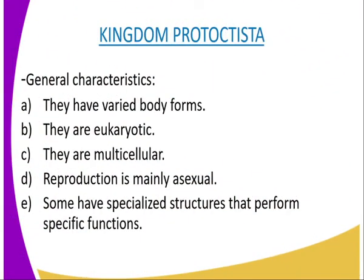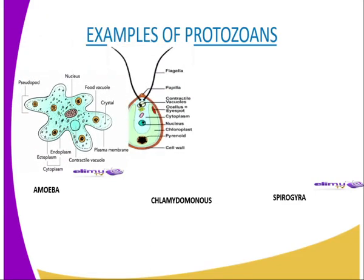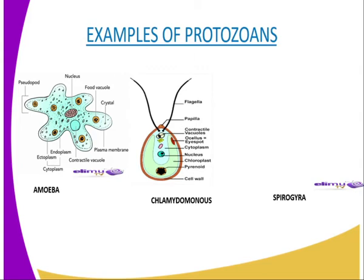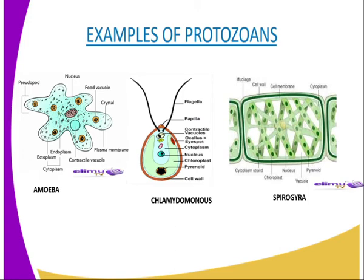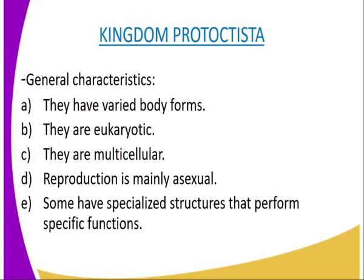The second kingdom that we are going to look at will be kingdom Protoctista, whereby examples of this kingdom include the amoeba. We have several members of kingdom Protoctista, whereby these are the protozoans. We can have the amoeba, we have the chlymidomonas as you can see from our screen, and we have also the spirogyra. The members are very many but this is just a representation of examples of the protozoans.